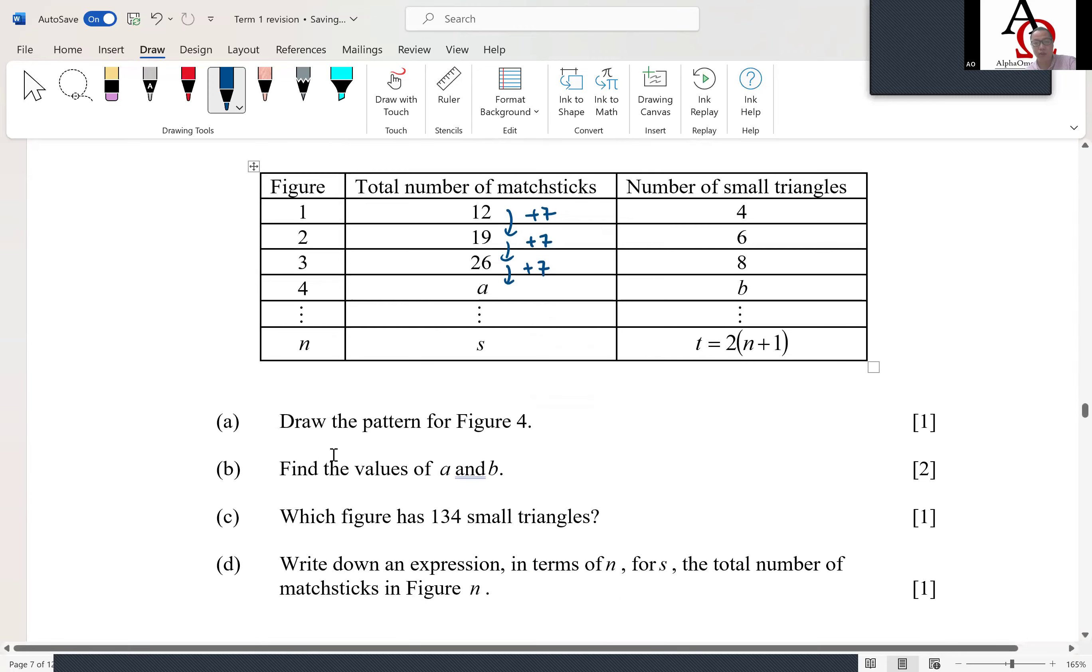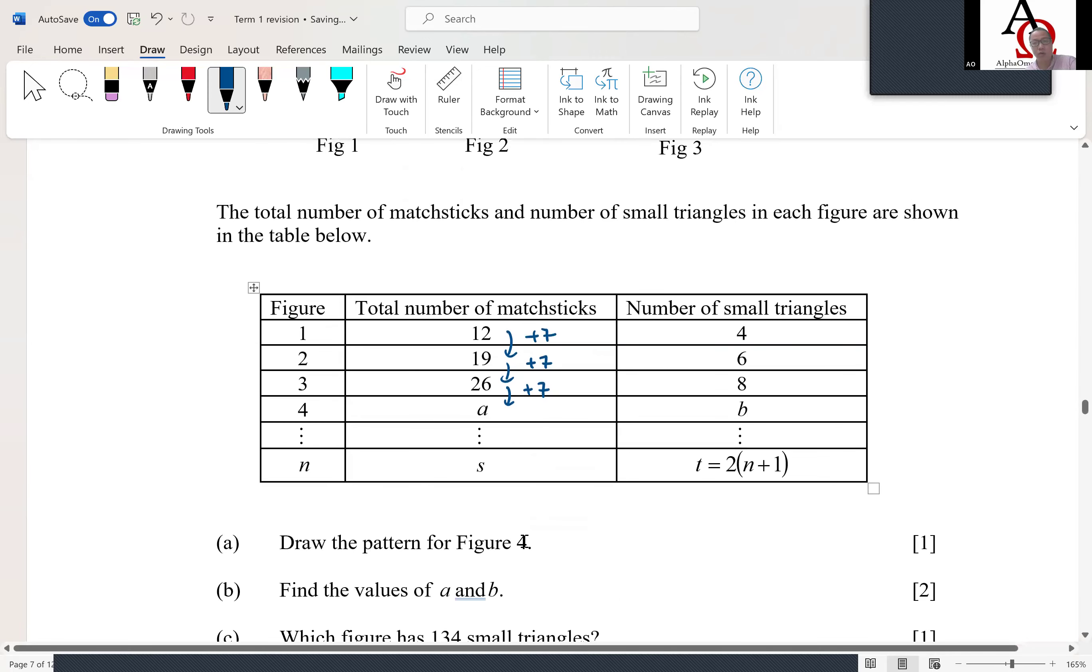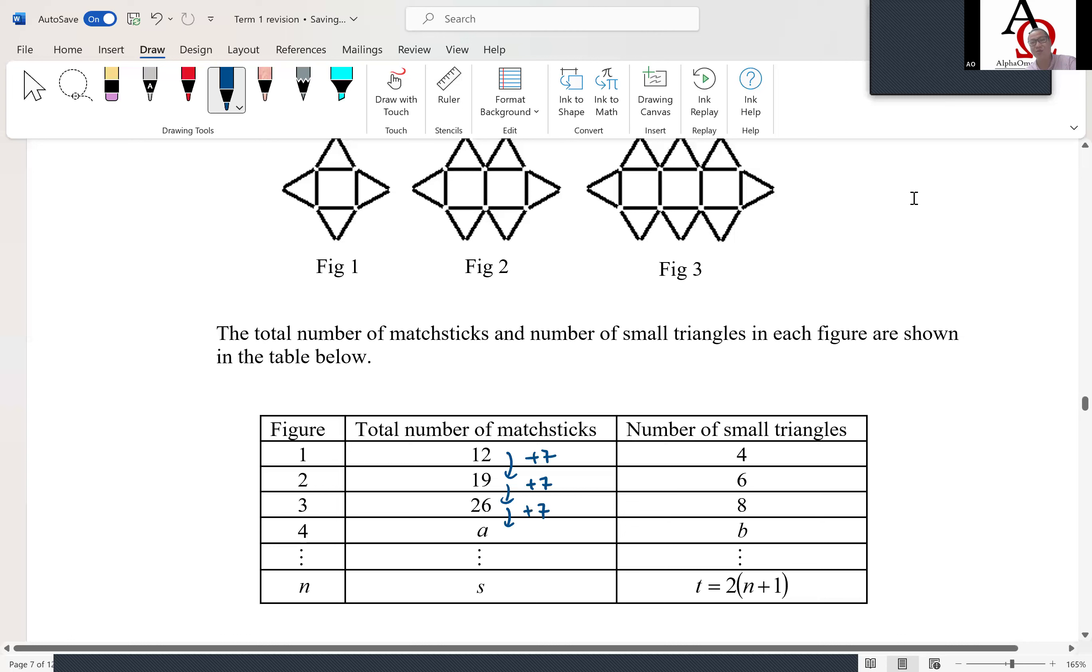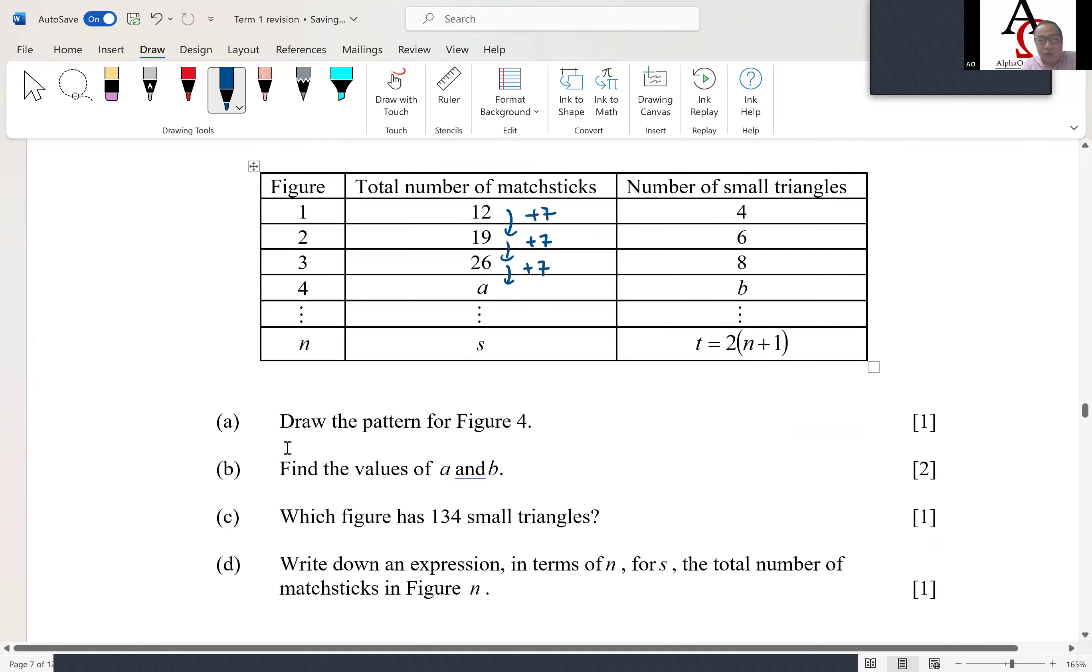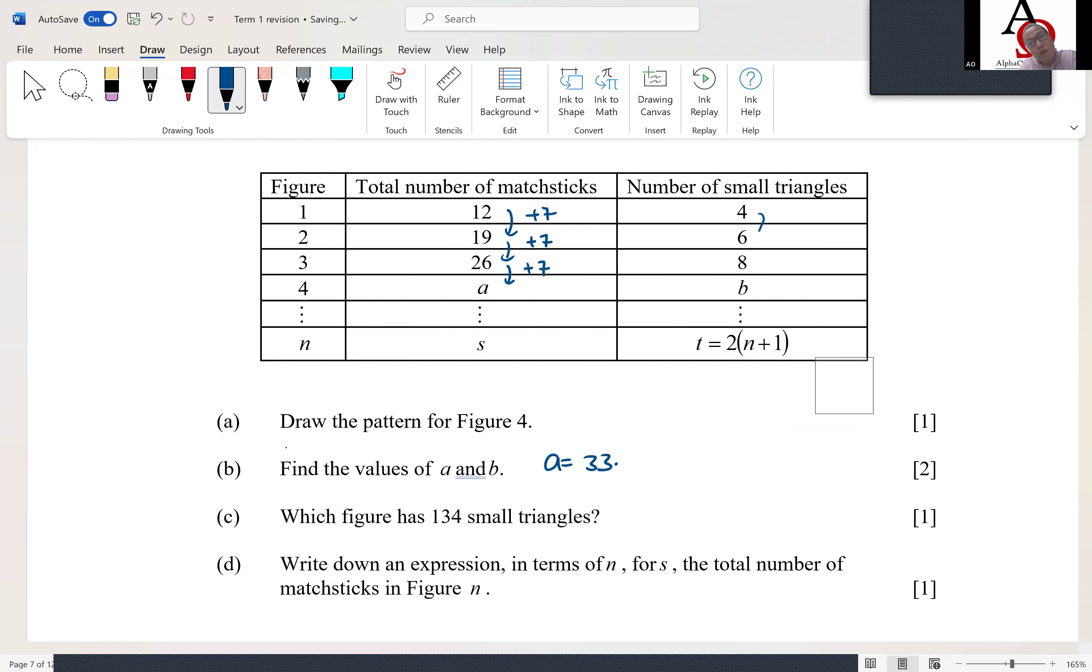So they asked you to draw, okay. You're going to draw figure four with all the triangles. So the value of a would be 33. The value of b would be this one, right? So again, plus two, plus two.